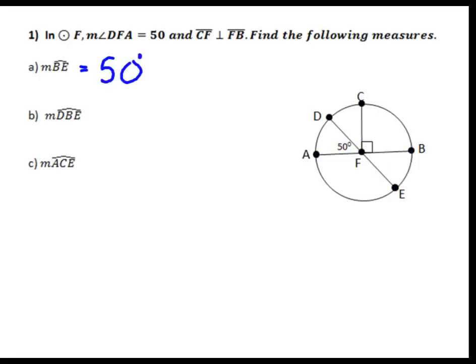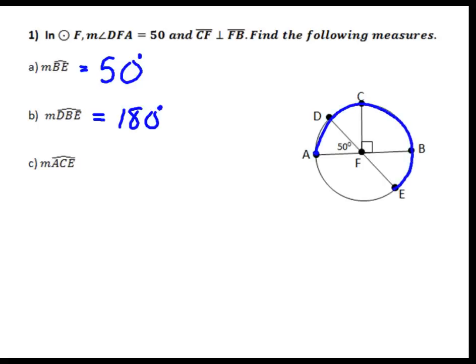Part B: the measure of arc DBE. DBE means start at D, go through B, and all the way to E. Since this is a diameter, that is a semicircle, and the measure of a semicircle is always 180 degrees. Part C: the measure of arc ACE. We start at A and go through C all the way around to E. This is clearly more than half a circle, so it's a major arc. The semicircle part is 180, plus arc AD is another 50 degrees. Using the arc addition postulate, I get 230 degrees.